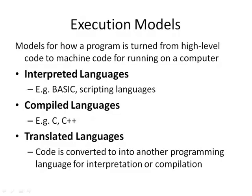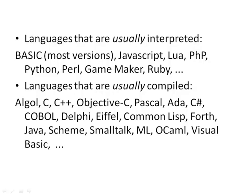There are a number of different execution models that programs can use. Interpreted languages include BASIC and a wide range of scripting languages. There are compiled languages, such as C and C++. There is also something called translated languages, where you write code in one programming language and run it through a translator that outputs code in a different high-level language — for example, converting to C which can then be compiled and optimized using a C compiler.